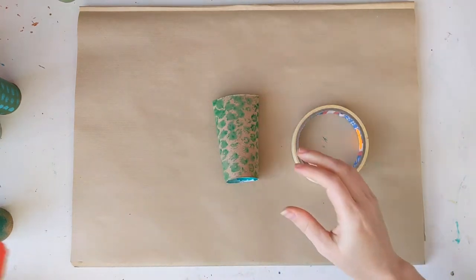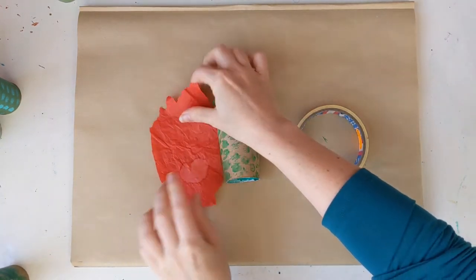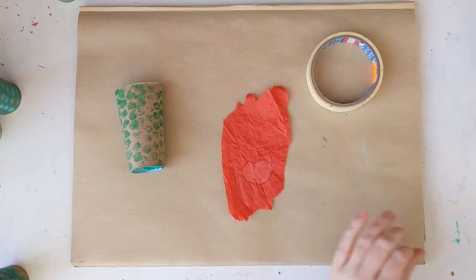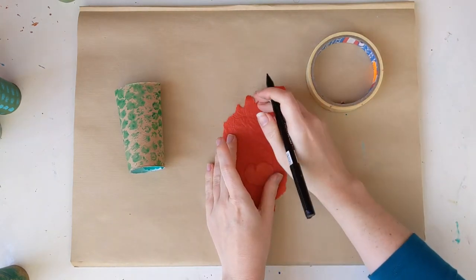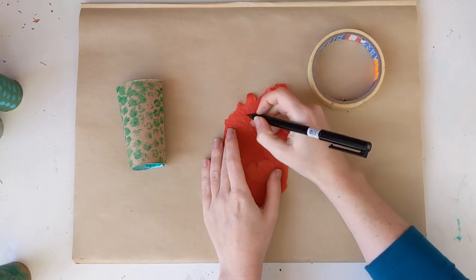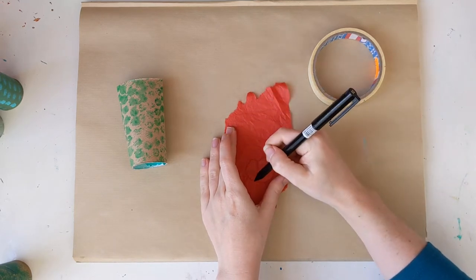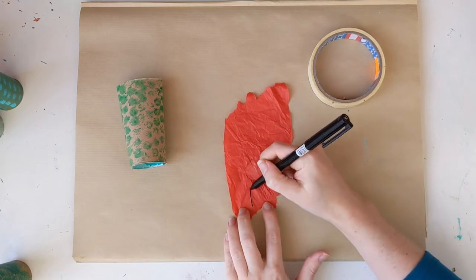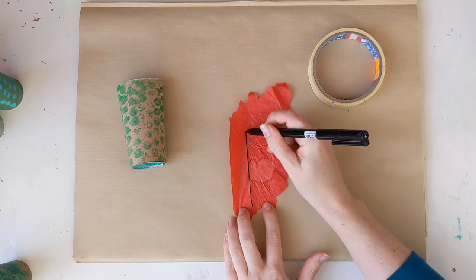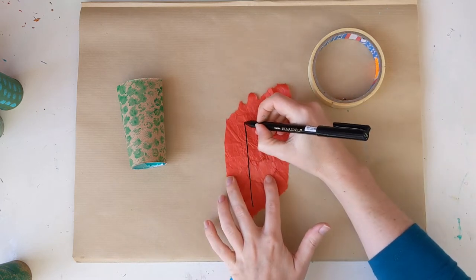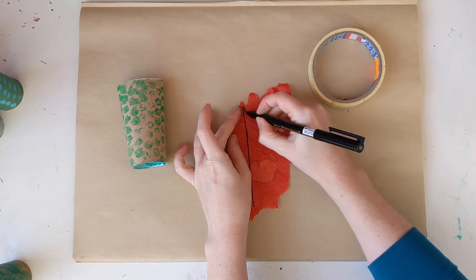You'll also need some tape. And we also need a bigger tongue. So I have some tissue paper here which is red and I'm going to draw a tongue shape onto it. The snakes have forked tongues so I need to make sure that I draw the tongue with two sections at the end like this.